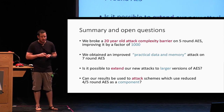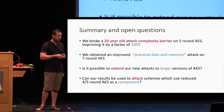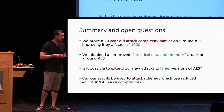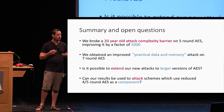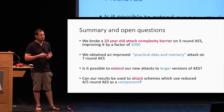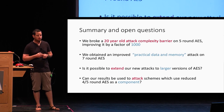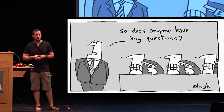To summarize: we were able to break a 20-year-old attack complexity barrier on five-round AES, improving it by a factor of more than 1,000. We also obtained an improved practical data and memory attack on seven-round AES. We now ask whether it is possible to extend this new attack technique to larger versions of AES, and whether the distribution properties from this attack can be used to attack the new lightweight cryptographic schemes that use reduced-round AES as a component. Thank you.